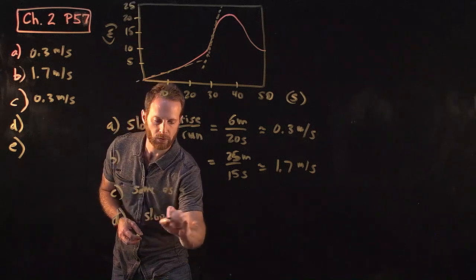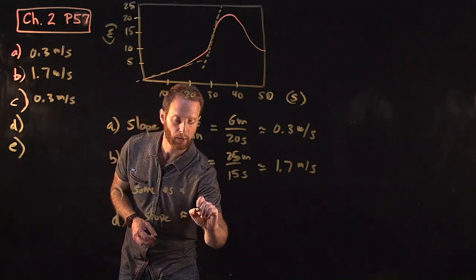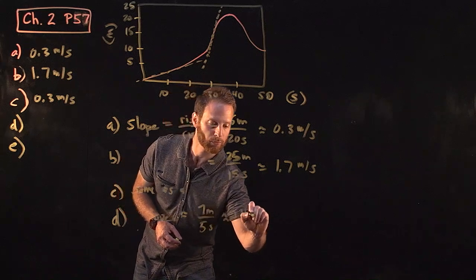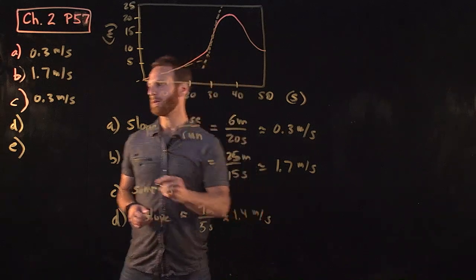So I estimate the slope as about 7 meters over the course of 5 seconds. In other words, 1.4 meters per second or so.